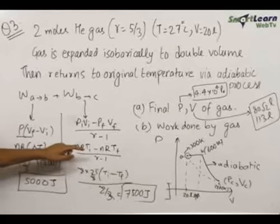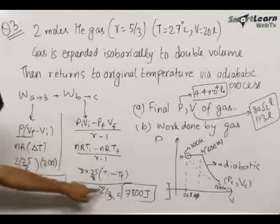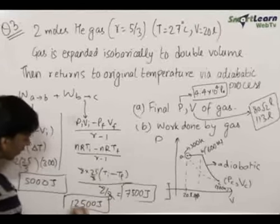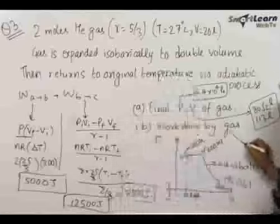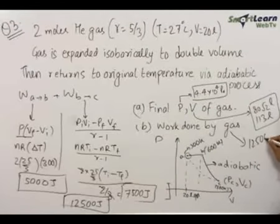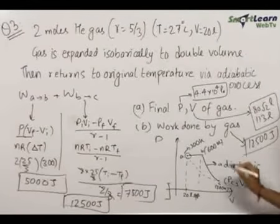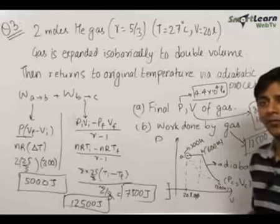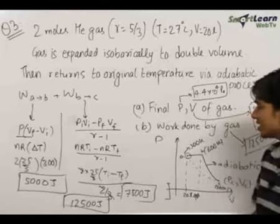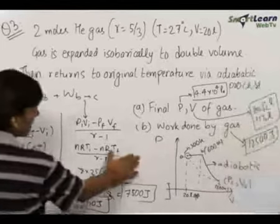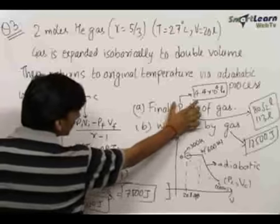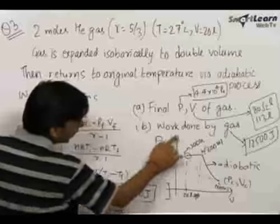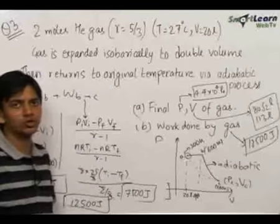The total work done by the gas from A to C equals 5000 + 7500, which comes out to 12500 joules. What we learned from this question is that making a graph and interpreting it to solve thermodynamics problems is really very helpful. The final answers: pressure Pc = 4.4 × 10^4 Pascals, volume Vc = 113 liters, and work done by the gas = 12500 joules in the whole process.